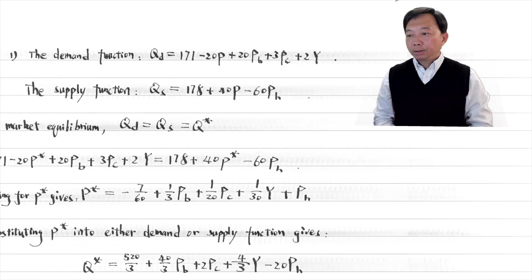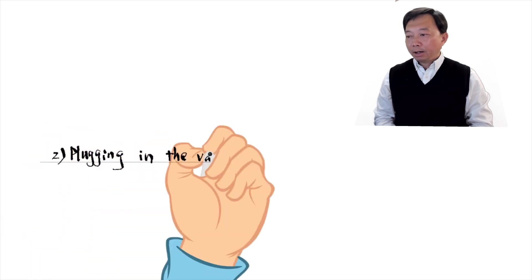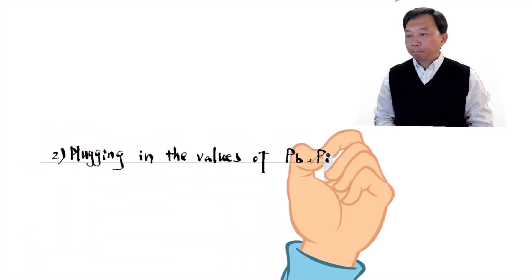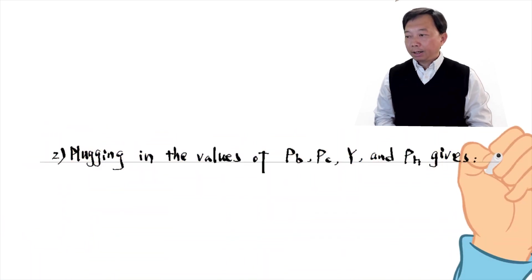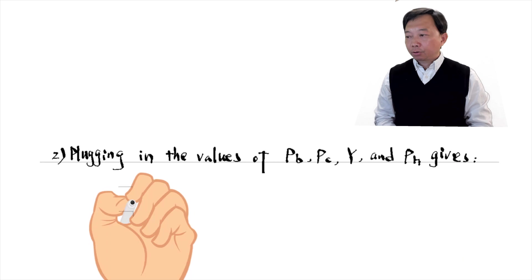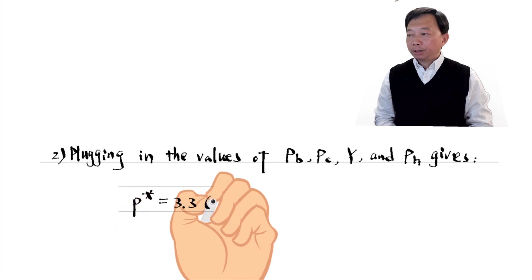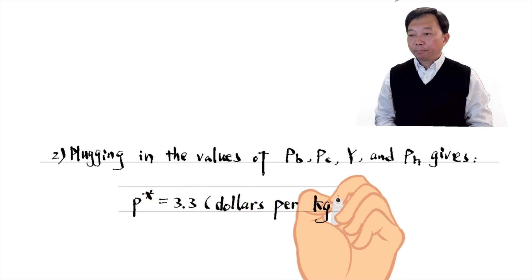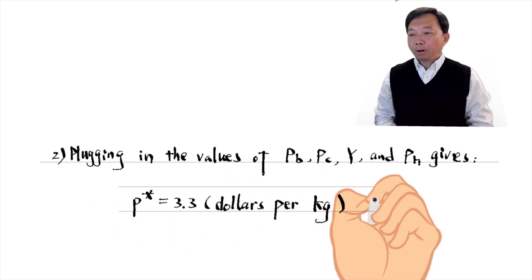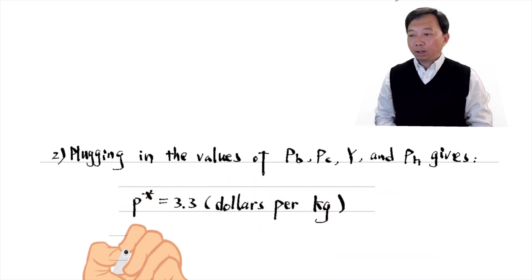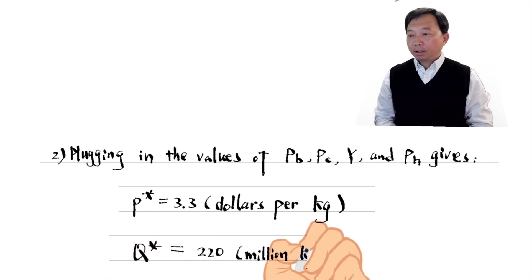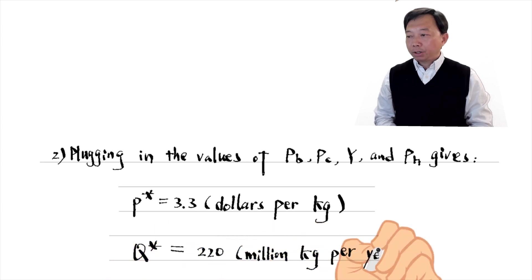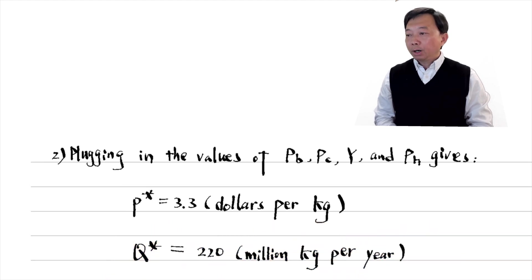In the second step, plugging in the values of Pb, Pc, Y, and Ph gives the equilibrium price of $3.30 per kilogram and the equilibrium quantity of 220 million kilograms per year.